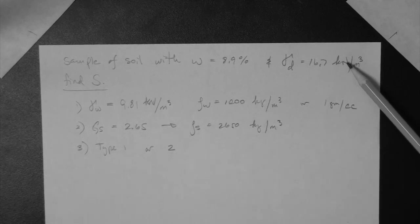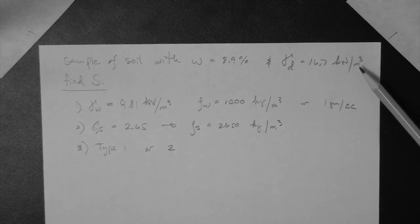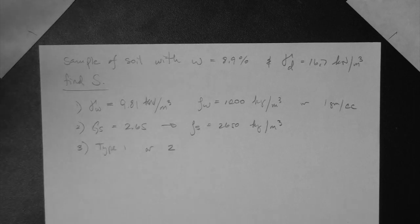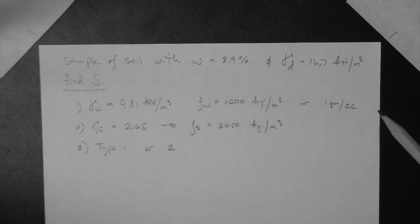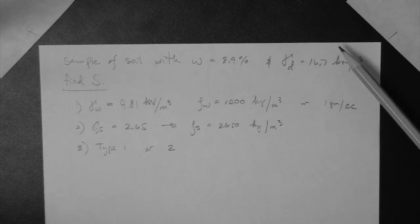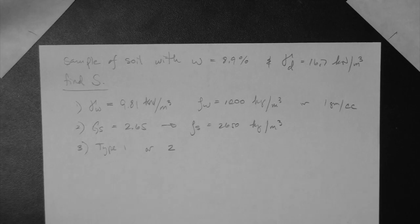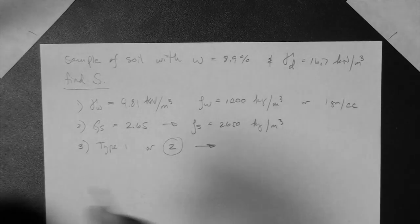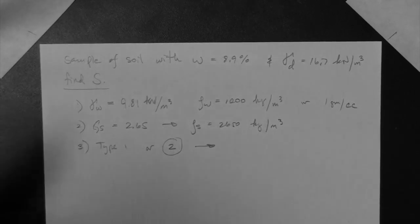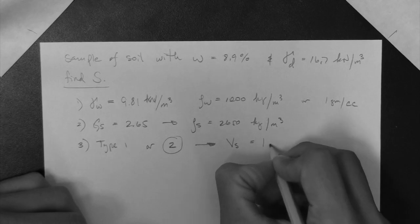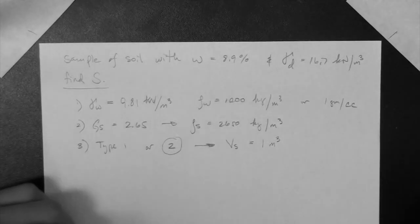And even though this has units, the units are a ratio, kN per meter cubed. That is, we don't have anything, we don't have any values for mass or weight or volume of the soil sample. We only know this relationship for it. Therefore, this continues to be a type 2 problem. So, we can assume a value, and typically we assume the volume of solids to be 1 meter cubed.